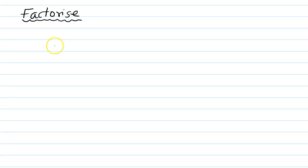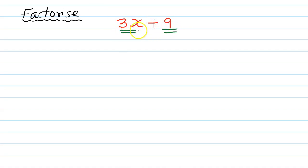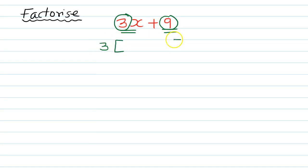Now let's look at factorization. Suppose the question is 3x plus 9. There are two terms. For the letter, x appears in the first term but not the second, so x cannot be common. However, 9 appears in the 3 times table, so let's take 3 outside.